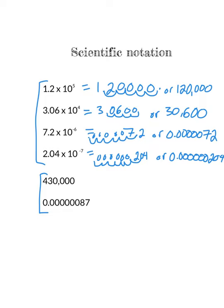Now let's practice converting to scientific notation. 430,000 is a really big number so I'm going to have a positive exponent. Imagining a decimal place there, it moves over 1, 2, 3, 4, 5 decimal places, so we say that's 4.3 times 10 to the 5th. The second number is really small so it will be a negative exponent — I need to get the decimal to the right place, moving over 1, 2, 3, 4, 5, 6, 7 places, giving 8.7 times 10 to the negative 7.